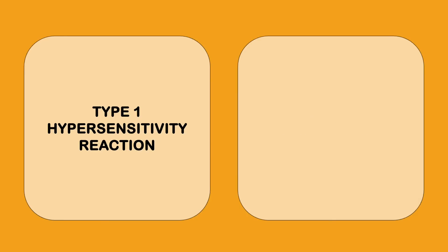Type 1 hypersensitivity reaction. What are the examples? It is atopic conditions, anaphylaxis, asthma, anaphylaxis, atopic conditions, and asthma.